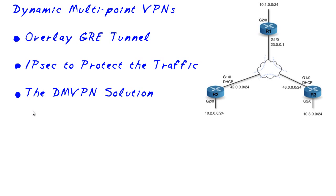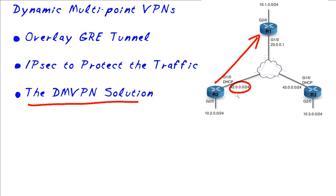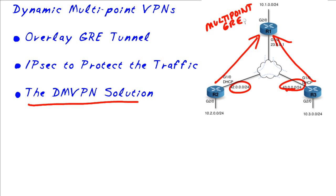So let's take a look at the Dynamic Multipoint VPN solution as a whole. When devices come up on the internet, they're going to report to the hub for that company, reporting whatever IP address they've been given. That IP address could be given via DHCP, PPPoE, or it could even be a static address. Once both routers have reported their IP address on the global interface facing the internet, they'll also join the common multipoint GRE network — maybe 10.60.1.0 — with direct connections between R2 and R1, and R3 and R1. If R2 ever needs to reach the 10.3 network, it makes a request through the protocol called Next Hop Resolution Protocol.